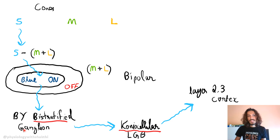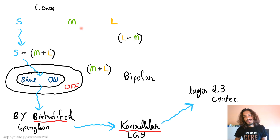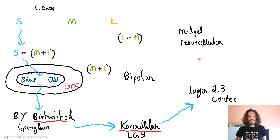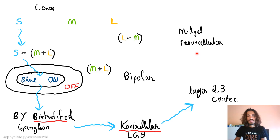To summarize the blue pathway: blue-on/blue-off bipolar cells → blue-yellow bistratified ganglion cells → koniocellular lateral geniculate body → layers 2 and 3 of the cortex. This is the bistratified koniocellular pathway. The other pathway for red and green is the midget parvocellular pathway. Blue-yellow and red-green are opponent color pairs — please remember these opposing color combinations.